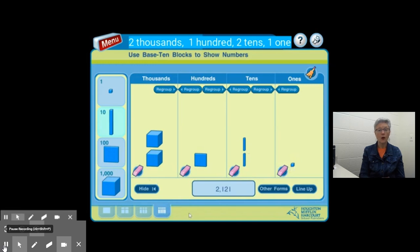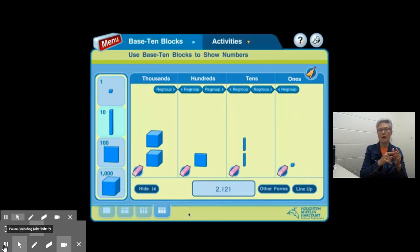We can regroup in order to represent 2,121 in a different way. I'm going to start by regrouping one of the thousands. When I regroup 1,000, I can turn it into 10 hundreds. So 1,000 is the same thing as saying 10 hundreds.